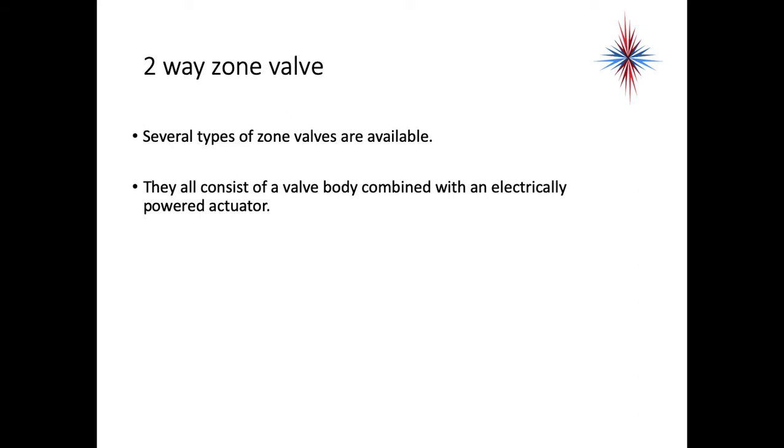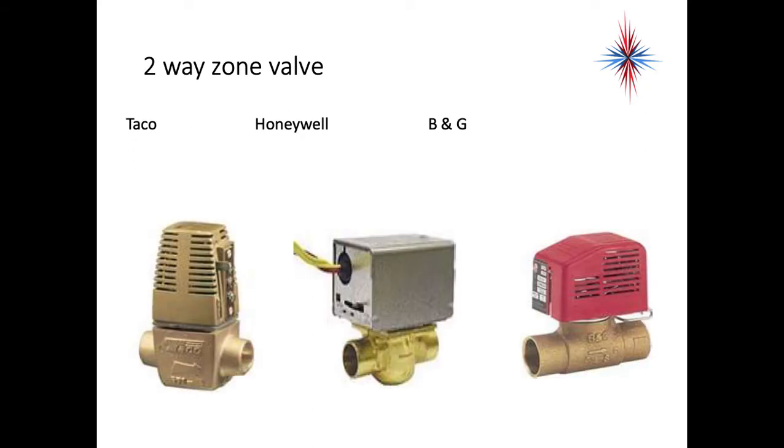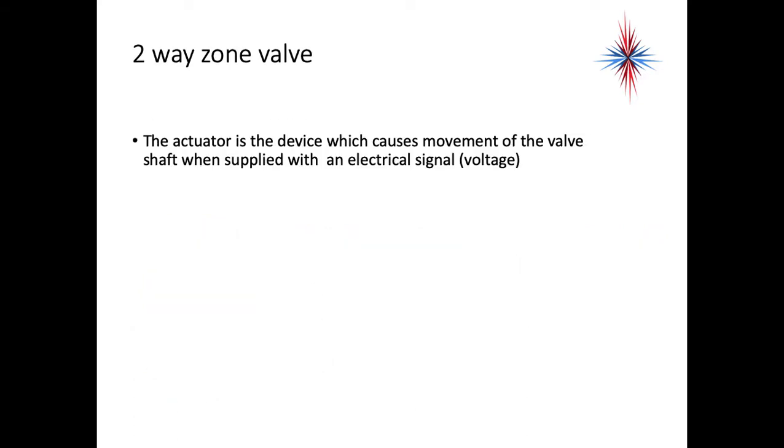Several types of zone valves are available. They all consist of a valve body combined with an electrically-powered actuator. The three we're going to talk about is the TACO, the Honeywell, and the B&G. Those are our most popular ones at this time. The actuator is a device which causes the movement of the valve shaft when supplied with an electrical signal, voltage.